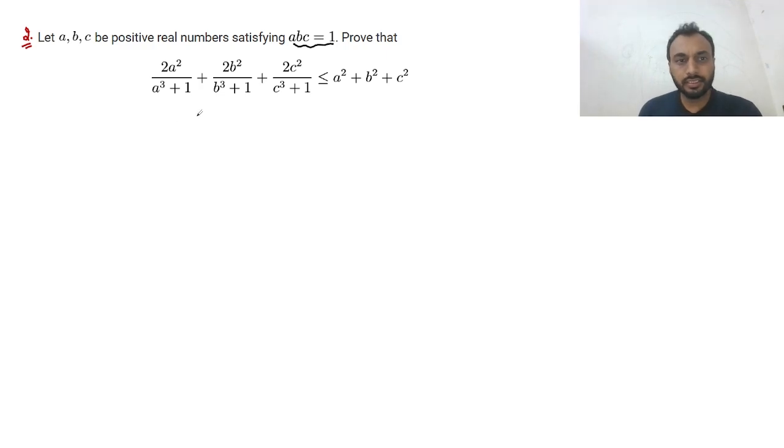First thing that we can try is can we make the denominator something good like a³+1 is there and we can put 1 as abc. If I pick the first expression, it is 2a² by a³. If I put 1 as abc, what we will get by taking a common, we can cancel out that a, we get 2a by a²+bc, right.